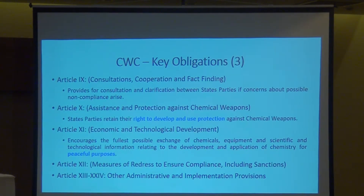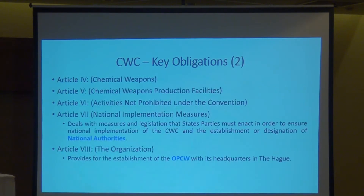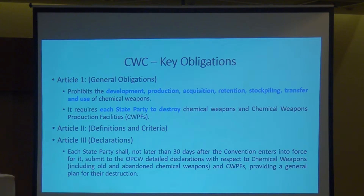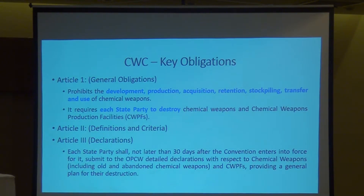The next few slides give a general overview of the CWC articles. Article 1 is very important — it lays down general obligations prohibiting development, production, acquisition, retention, stockpiling, transfer and use of chemical weapons. If you compare these wordings with the obligations under UNSCR 1540, you can notice that physical protection and transportation are not covered under Article 1. Under this article, each state party is also required to destroy chemical weapons and chemical weapons production facilities.